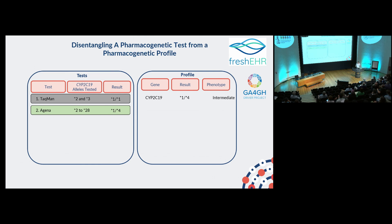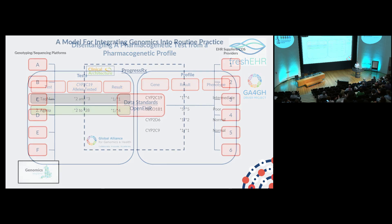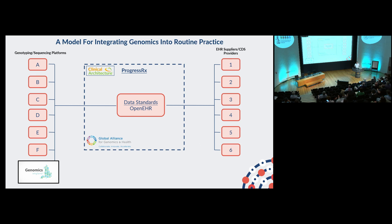This has been a very powerful approach to allow us to think about how your pharmacogenetic profile might grow and develop over time, as we expect it to, as genetic testing becomes increasingly ubiquitous. Because you're doing panel testing, you might have lots of other variants as well. We really think this is a model for integrating genomics in routine practice.